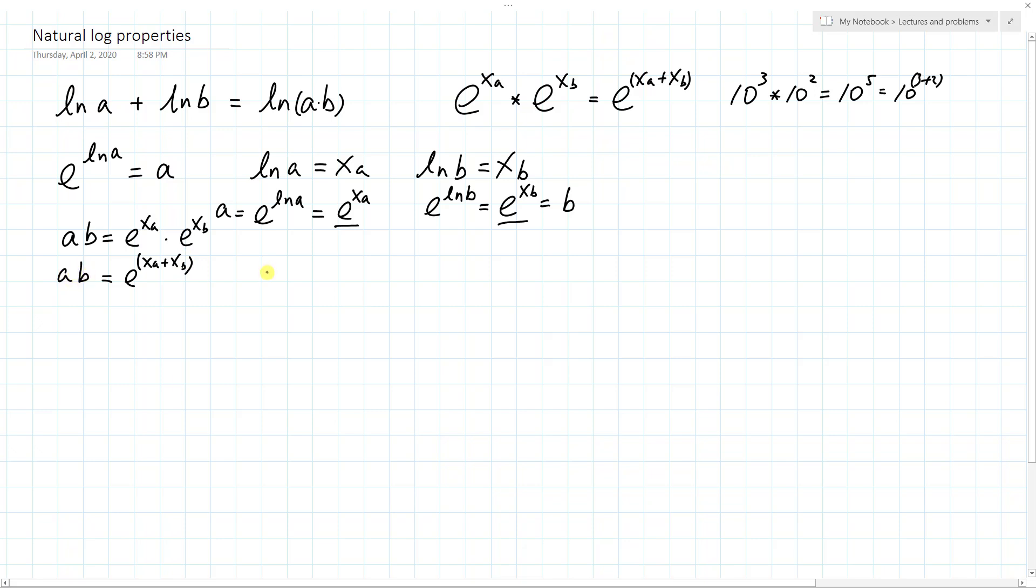So what if I take the natural log of the left side and also the right side, and then I get natural log of ab equals natural log e to the xA plus xB. And inverse functions, they cancel each other's effect, xA plus xB.